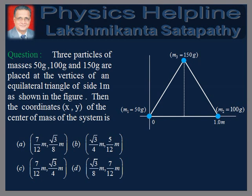The options are: (A) 7/12 meters, √3/8 meters; (B) √3/4 meters, 5/12 meters; (C) 7/12 meters, √3/4 meters; (D) √3/8 meters, 7/12 meters.